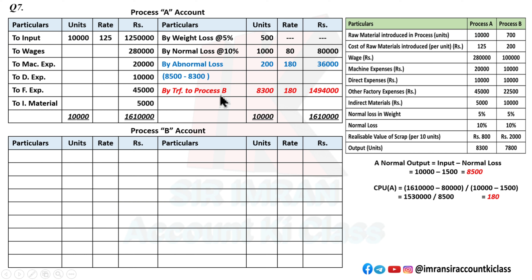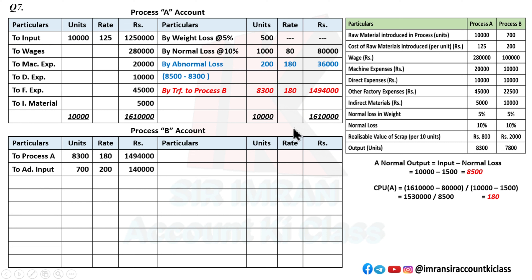Now transfer this to Process B as input. Process B also has an additional raw material input of 700 units at ₹200 per unit = ₹1,40,000 (additional input). All expenses — wages, direct, indirect material — are entered on the debit side of Process B.